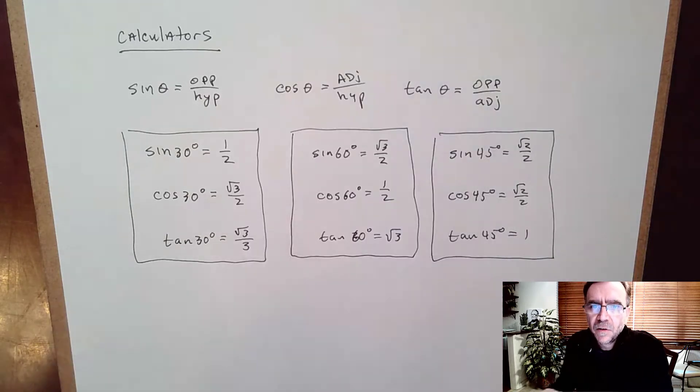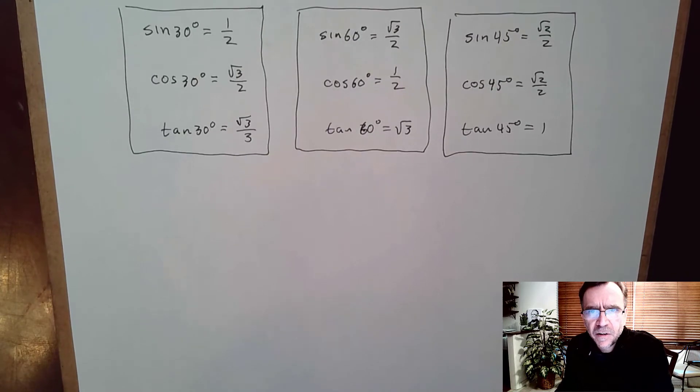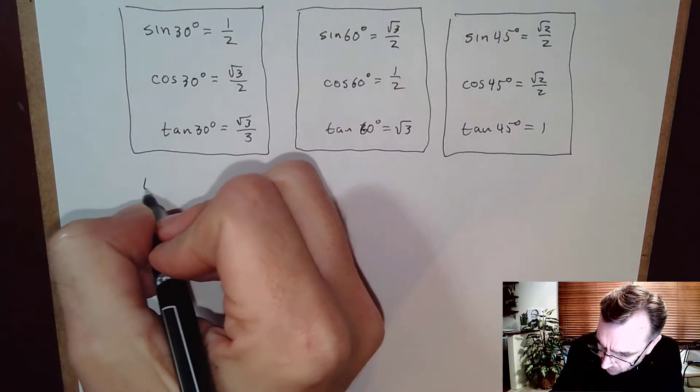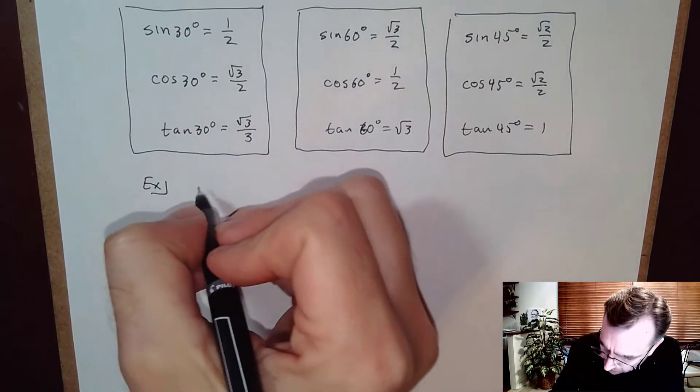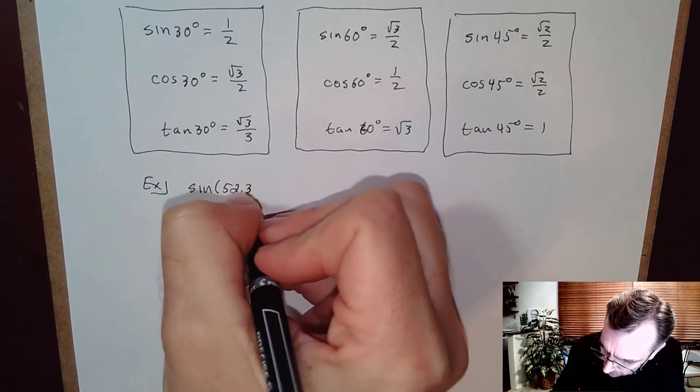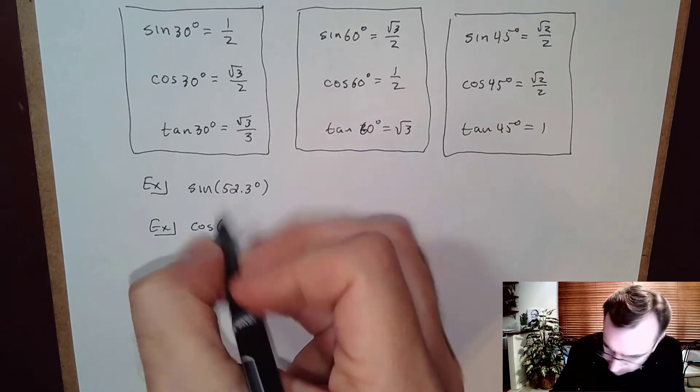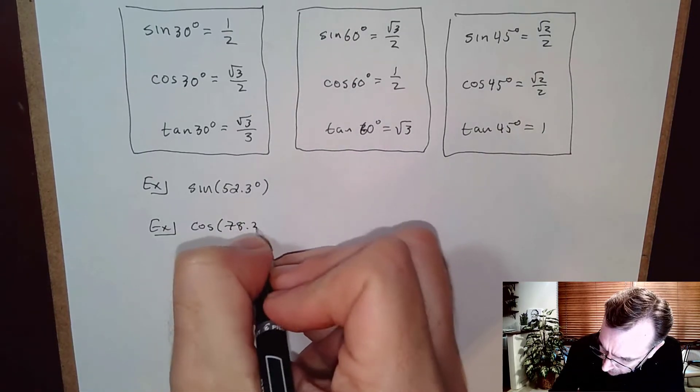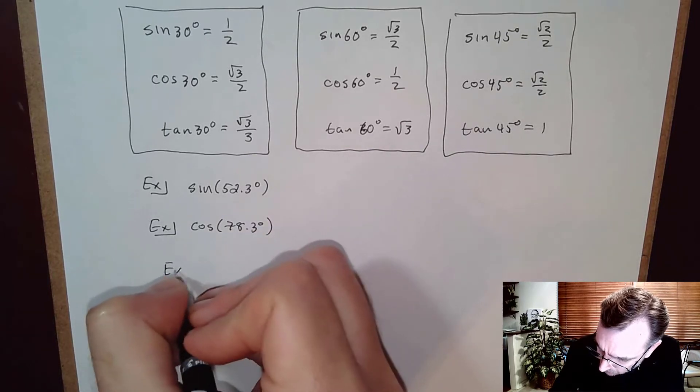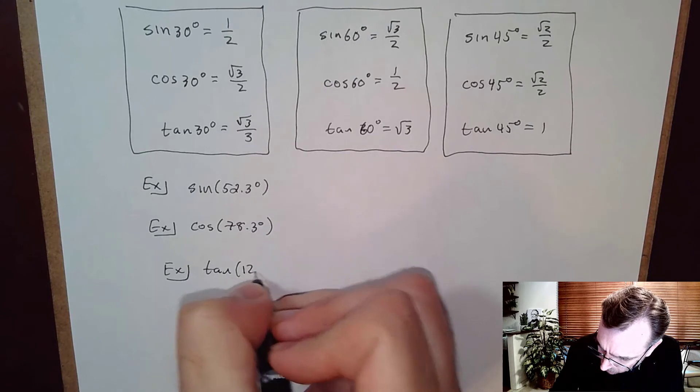Those are the ones we're supposed to memorize. Now what if our angles are not really special? For example, I want to calculate sine of 52.3°, cosine of 78.3°, and tangent of 12.1°.